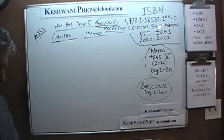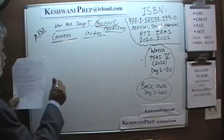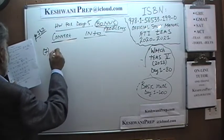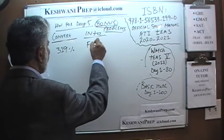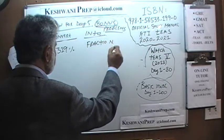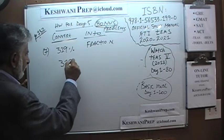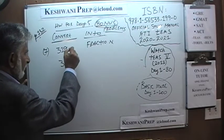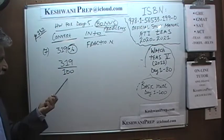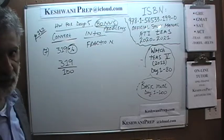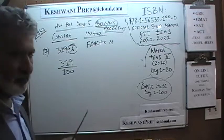Number 7: convert 319% into fraction and decimal. 319% means 319 out of 100, and that is the fraction. It cannot be reduced any further — there are no common factors between 319 and 100. That is the fraction form.